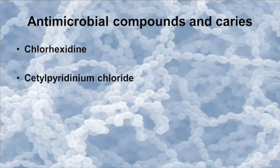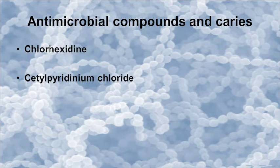Quaternary ammonium compounds are widely used biocides with a broad antimicrobial effect. The agent cetylpyridinium chloride is a quaternary ammonium compound added to mouth rinses and toothpastes. A systematic review assessing the effect of cetylpyridinium chloride-containing mouth rinses as an adjuvant to tooth brushing reported a plaque-reducing effect; however, there is lack of evidence from high-quality clinical studies regarding the caries preventive effect.